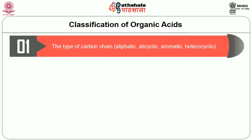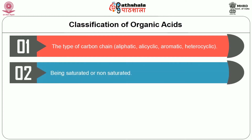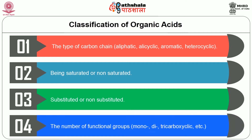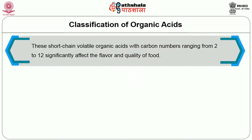They can be classified according to the type of carbon atom — either aliphatic, alicyclic, aromatic and heterocyclic. Second, being saturated or non-saturated. Third, substituted or non-substituted. Fourth, by the number of functional groups — either mono, di or tricarboxylic acid. These short-chain volatile organic acids with carbon numbers ranging from 2 to 12 significantly affect the flavor and quality of food.